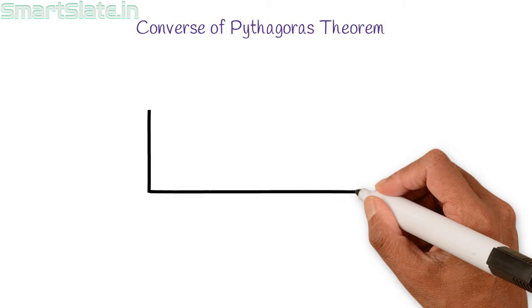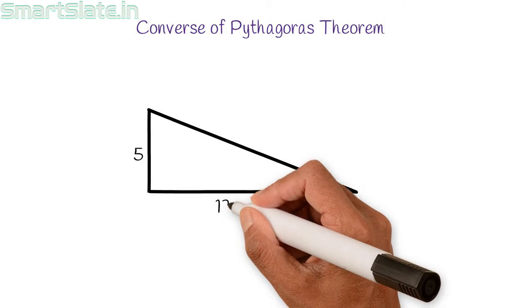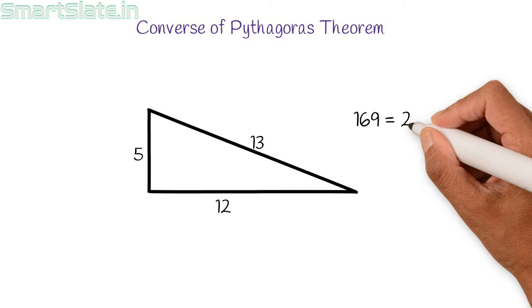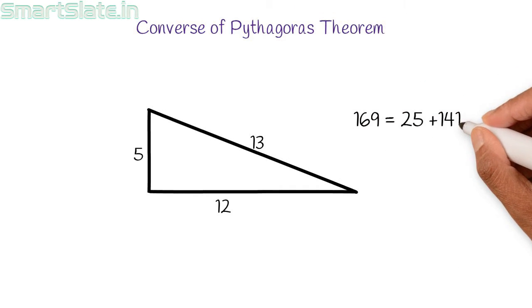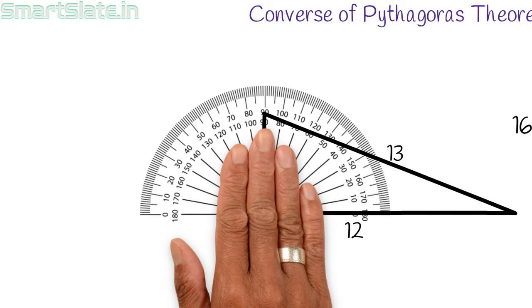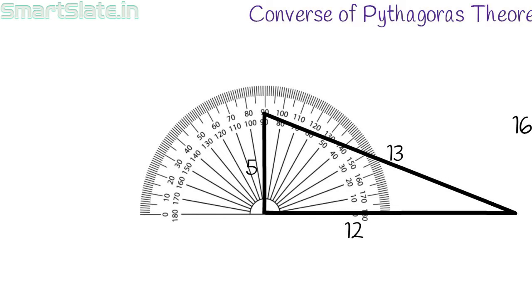Draw a triangle with sides 5, 12 and 13. Here 13 square is equal to addition of squares of 5 and 12. Now measure the angle which is opposite to longest side of the triangle. It is 90 degrees.